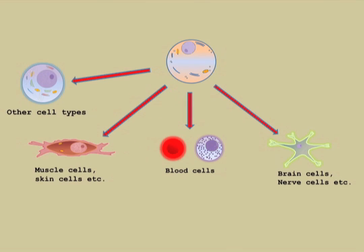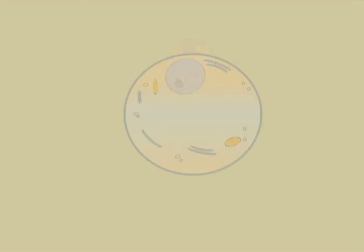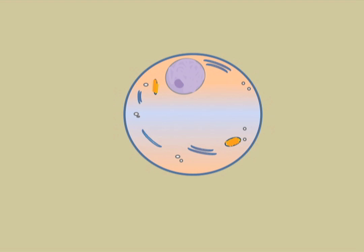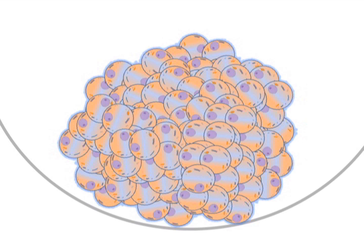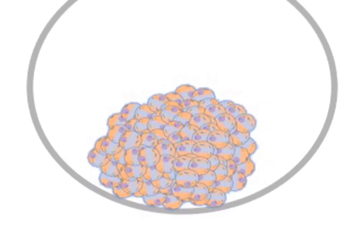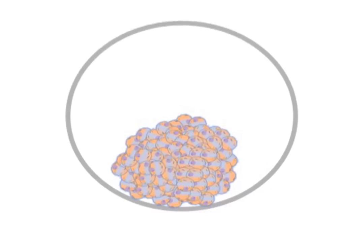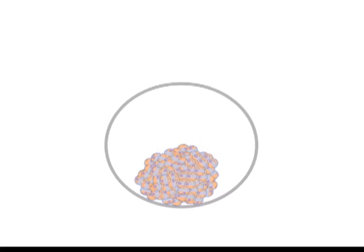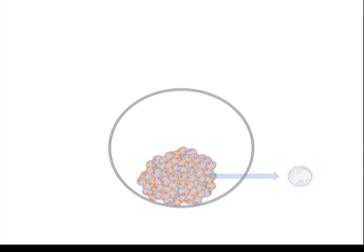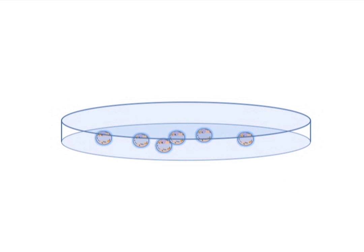These stem cells are the master templates which have the potential to become any type of cell in the body, so understandably scientists around the world are pretty interested in them. Embryonic stem cells can be collected from donated early-stage human embryos once they form a ball of around 70 to 100 undifferentiated cells called a blastocyst. They can then be taken, grown, and maintained in cultures in the lab.